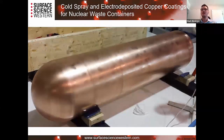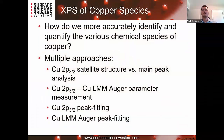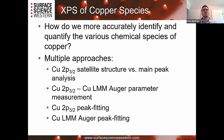This is what the finished product looks like — big long tubes clad in pure copper. On the XPS side, we're looking to more accurately identify and quantify the various chemical species of copper on these systems. We've developed multiple approaches: looking at the copper 2p spectrum and satellite structure versus the main peak, Auger parameter measurements, curve fitting of the Cu 2p 3/2 peak, and curve fitting of the Auger peak.